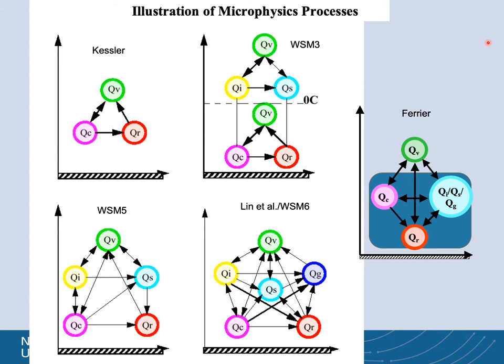This schematic shows several examples of microphysics options in WRF, with the species represented in these schemes. The simplest is the Kessler, called a warm rain scheme because it has no ice, and the only species it carries are water vapor, cloud water, and rain water — really only useful for idealized cases. The next level of sophistication is WSM-3, which still has three arrays, but now depending on the temperature you have either ice or cloud water, or snow or rain water, occupying the same array.